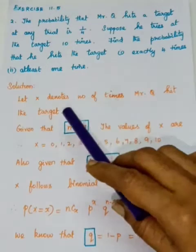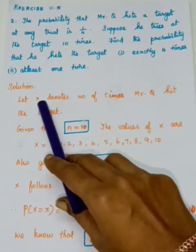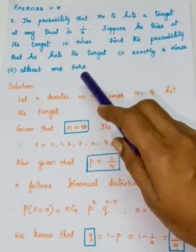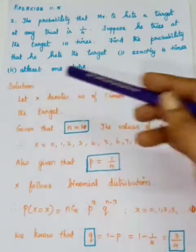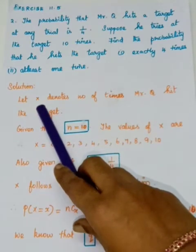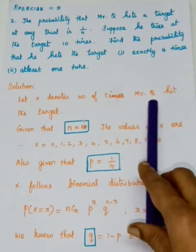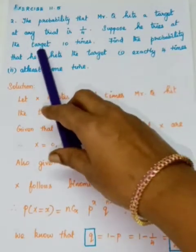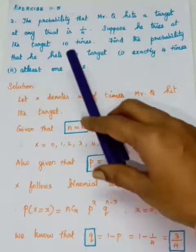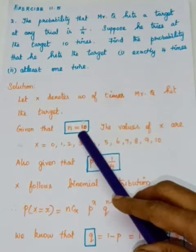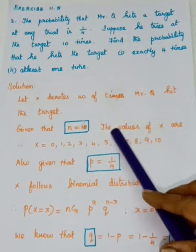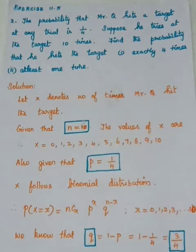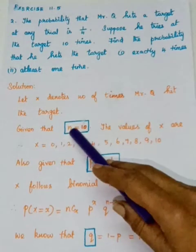Here first you have to denote the random variable. It is asked: find the probability that he hits the target exactly 4 times, at least 1 time. So I have denoted the random variable — X denotes the number of times Mr. Q hits the target. He tries at the target 10 times, so N we have to take as 10. The random variable takes values X equal to 0 up to 10 because the experiment is repeated 10 times. So N is equal to 10.